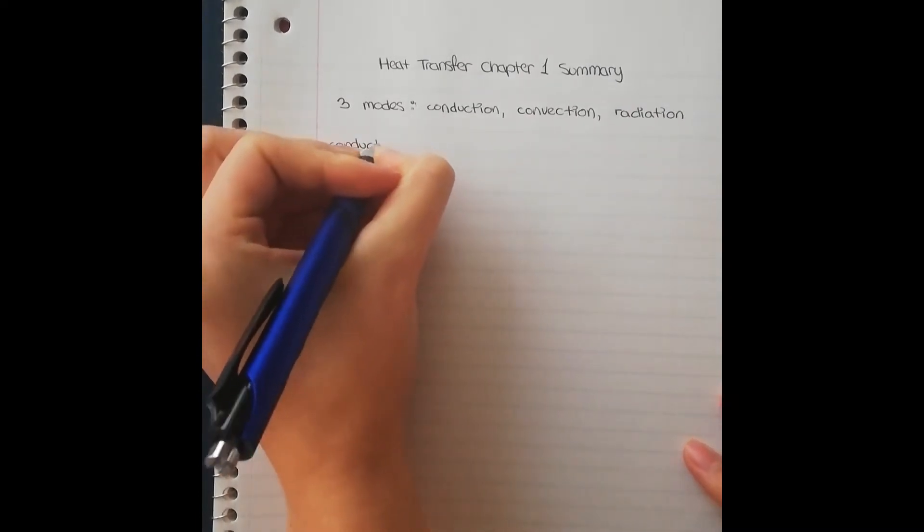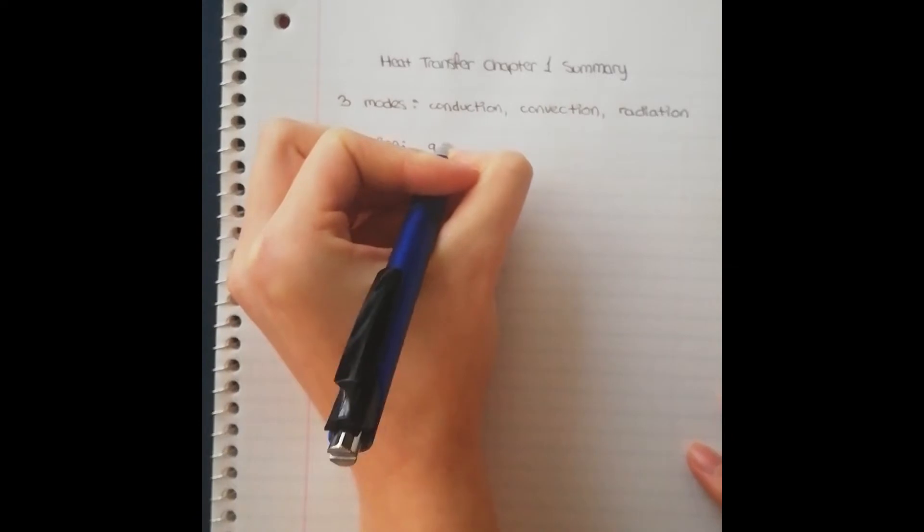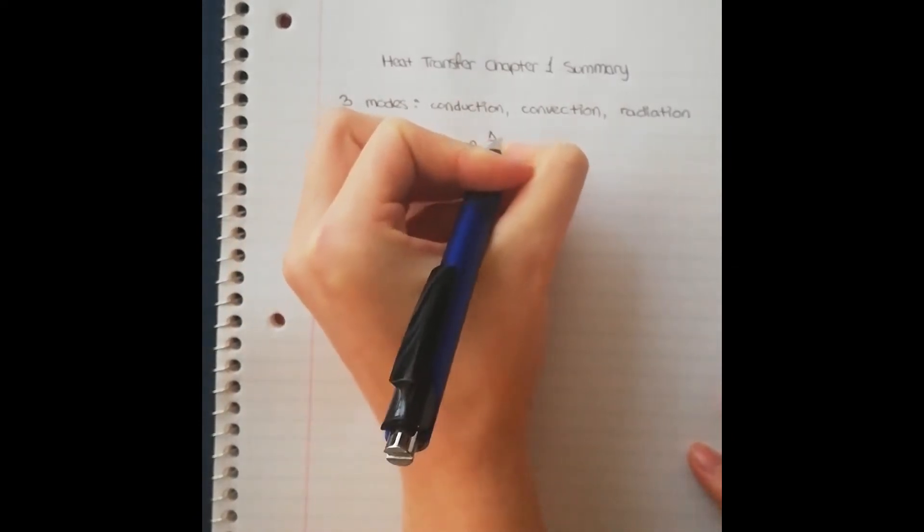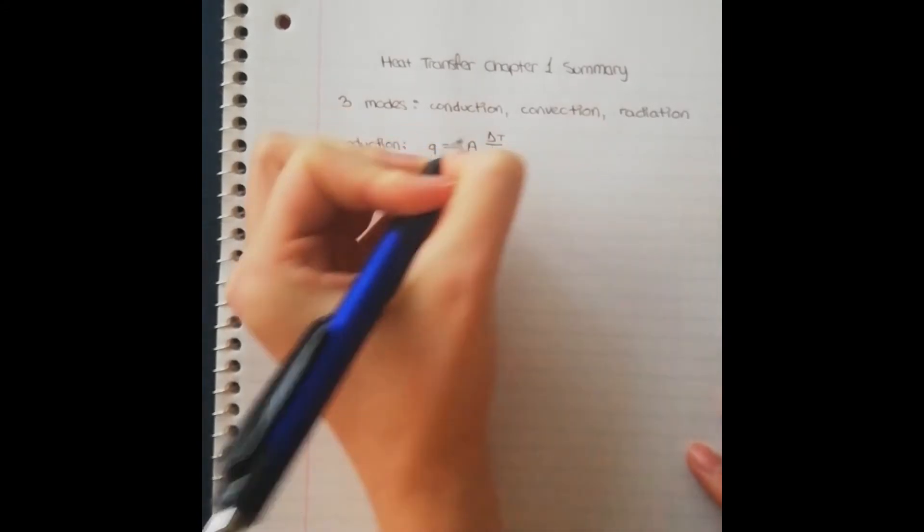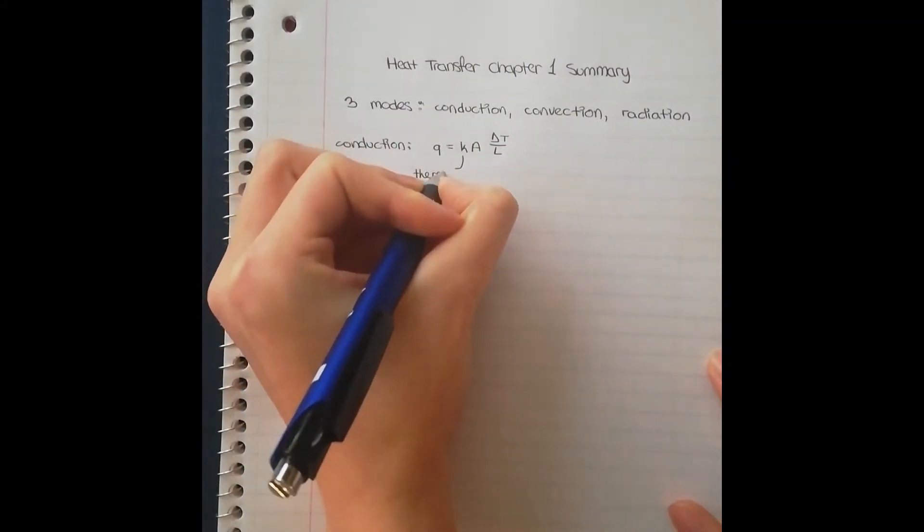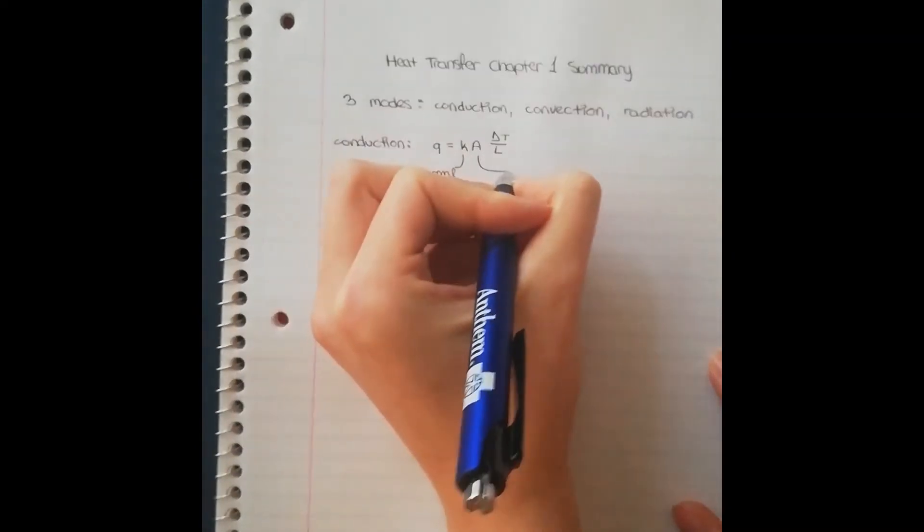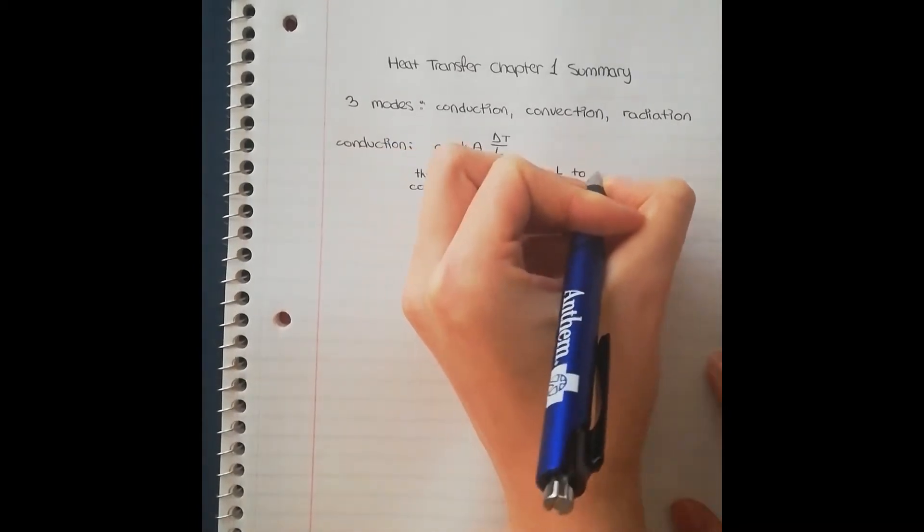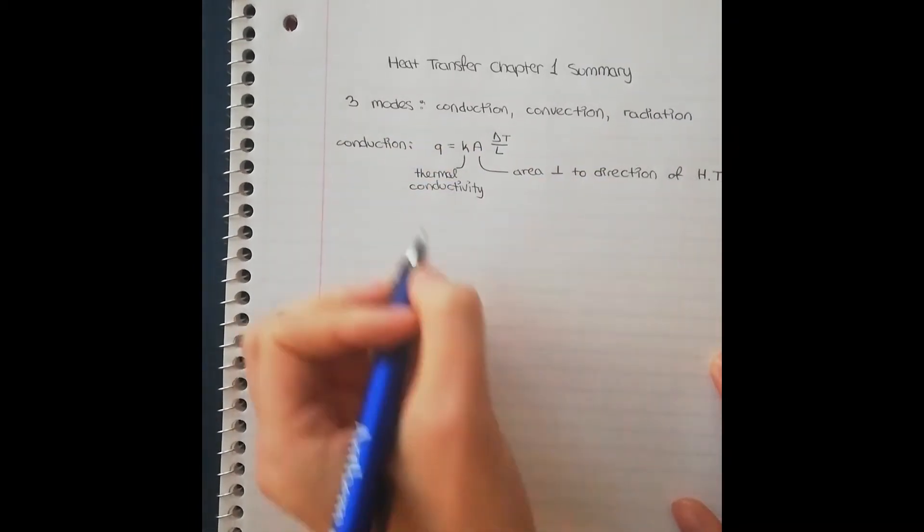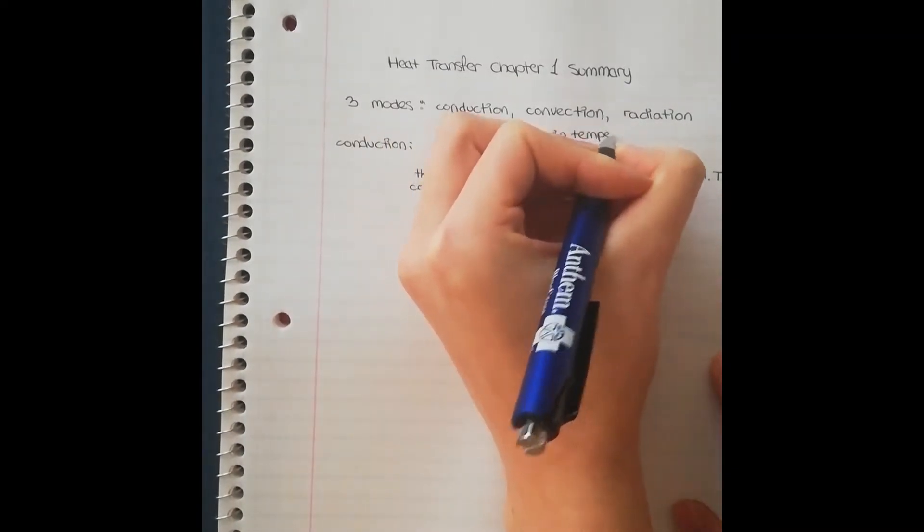So let's start out with conduction. The guiding equation for conduction is Q is equal to K A delta T divided by L. K is a material constant, and it is called the thermal conductivity. A refers to the area perpendicular to the direction of heat transfer. Delta T refers to the change in temperature, and L is the length.